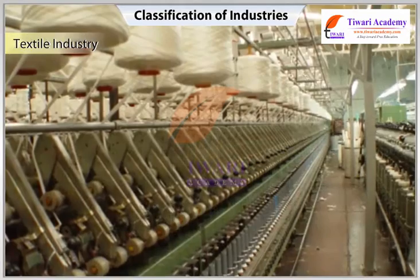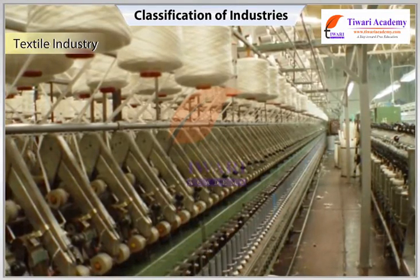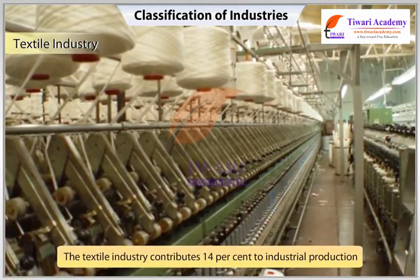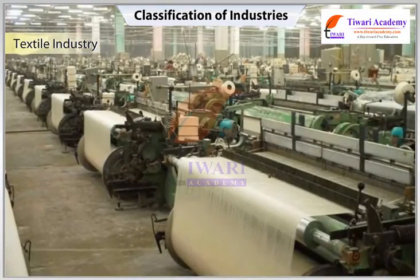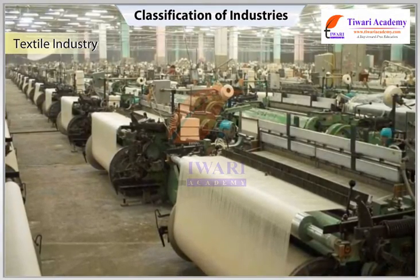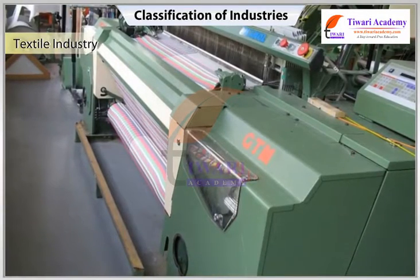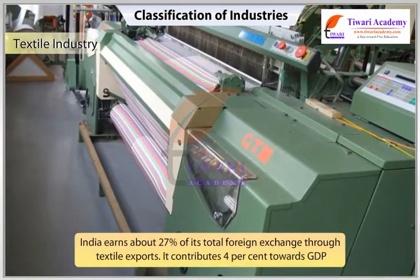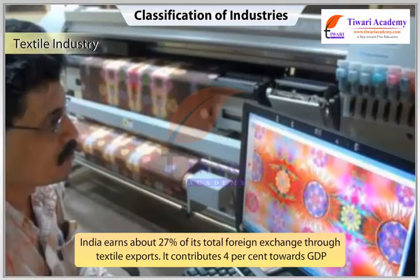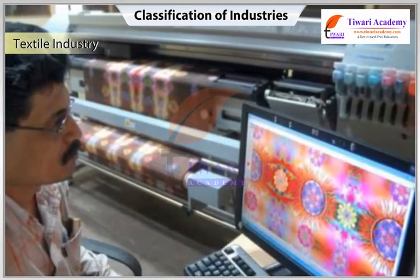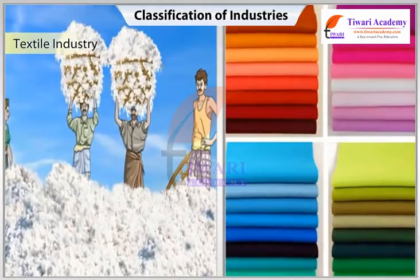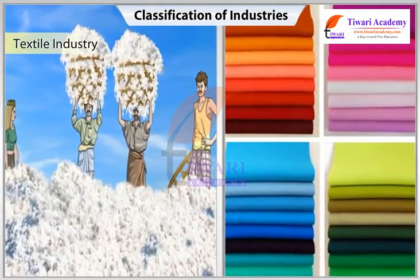The textile industry in India is one of the leading textile industries in the world. It contributes 14 percent to industrial production and provides employment to 35 million persons directly — the second largest employer after agriculture. It earns about 27 percent of total foreign exchange through exports, contributes 4 percent towards GDP, and is the only industry in the country which is self-reliant across the entire value chain from raw material to highest value-added products.